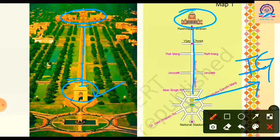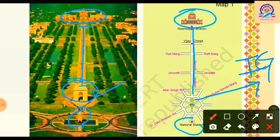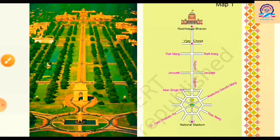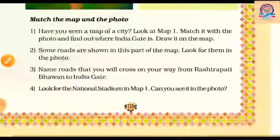India Gate is the monument built in memory of the soldiers and officers who died in World War One. Their names are inscribed on India Gate — this is an important fact you should know. As you can see, below India Gate there is a canopy, which is the statue behind India Gate, and below that there is the National Stadium, which is not shown in the photograph but is visible on the map.